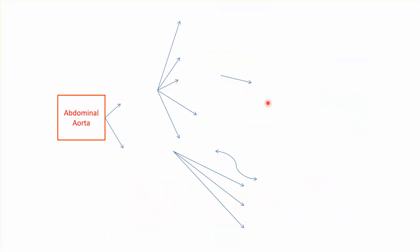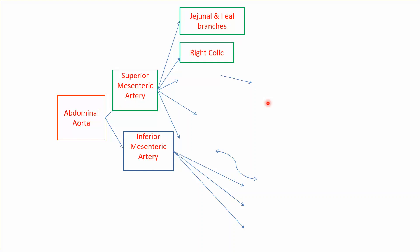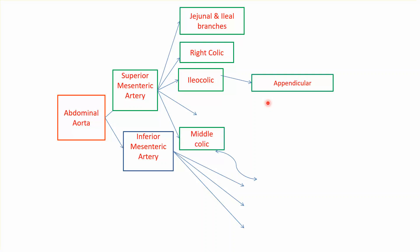Now we will see the branches of the superior mesenteric and inferior mesenteric arteries. The superior mesenteric gives jejunal and ileal branches to the jejunum and ileum. It gives the right colic going to the ascending colon, and the ileocolic which further gives the appendicular artery. It also gives the middle colic, and the inferior pancreaticoduodenal, which is one of the first branches of the superior mesenteric artery.